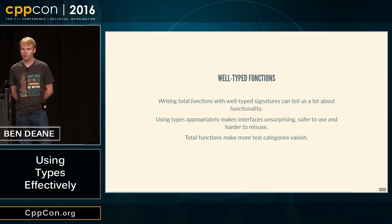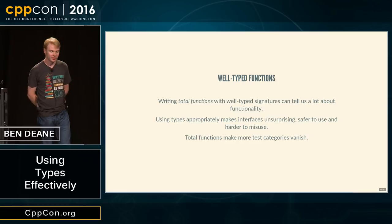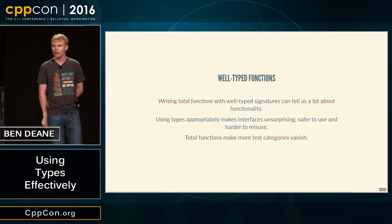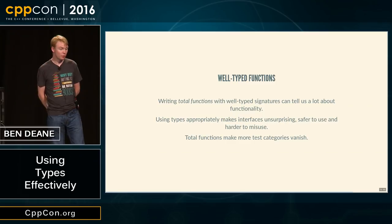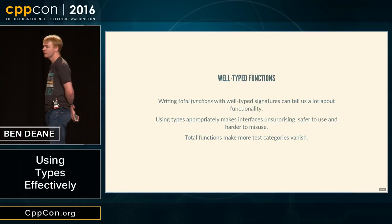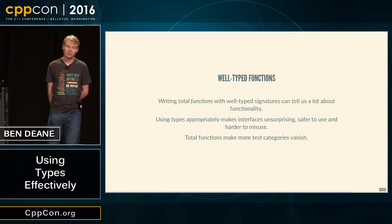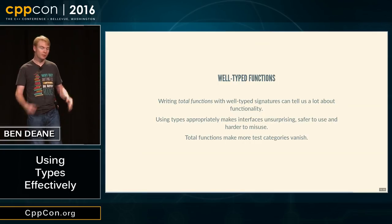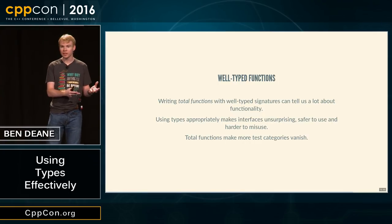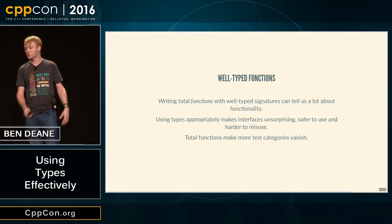If you write functions without preconditions — total functions — with well-typed signatures, it makes them much easier to use. It makes your APIs unsurprising, safer to use, harder to misuse. Whole categories of tests sort of vanish if your types simply can't express the edge cases they used to, because the types didn't fit the business logic.